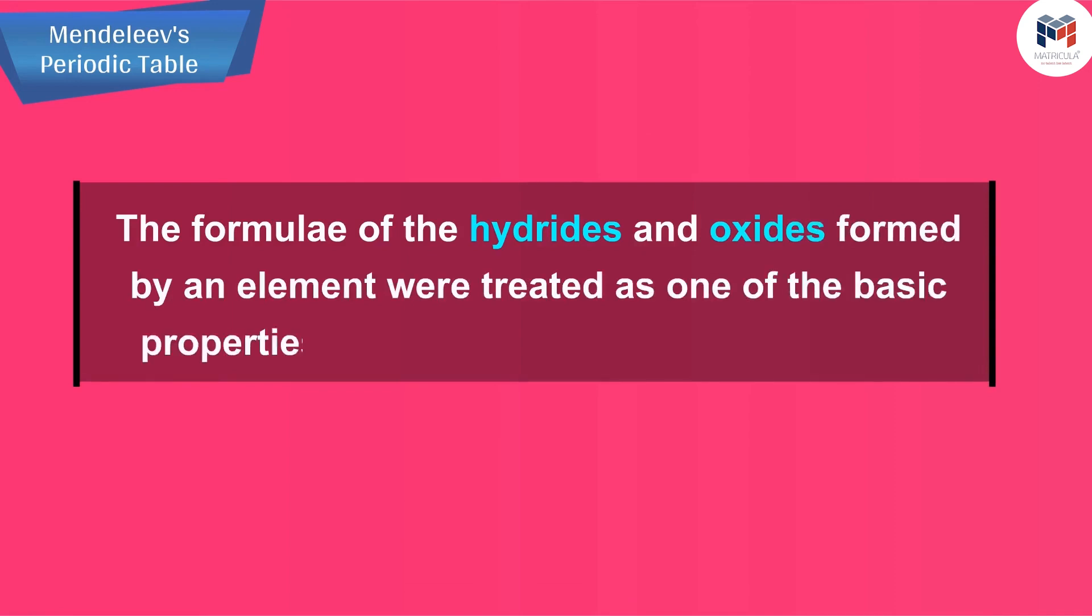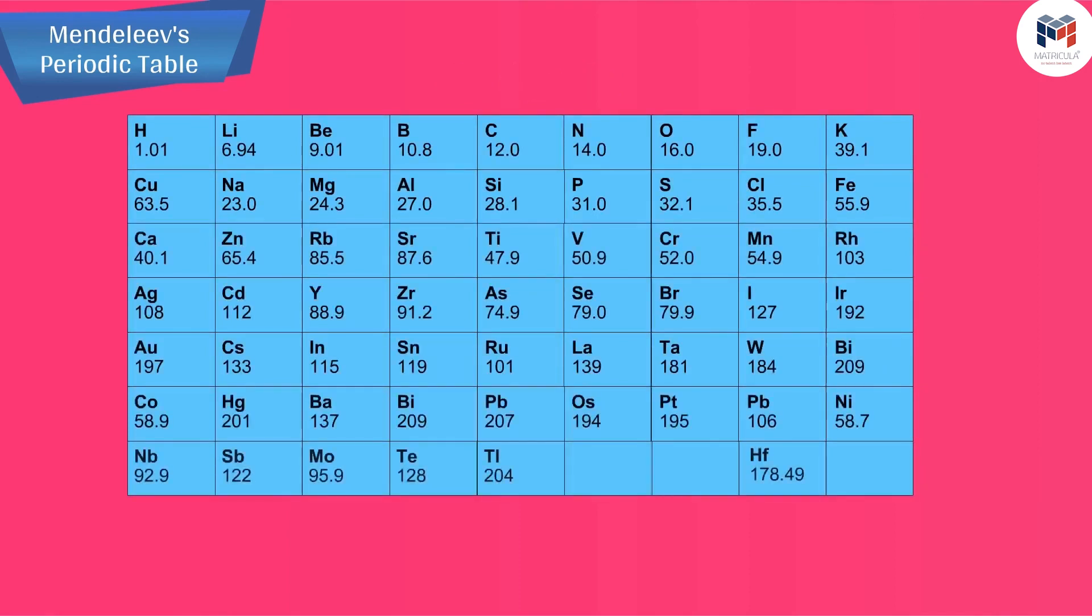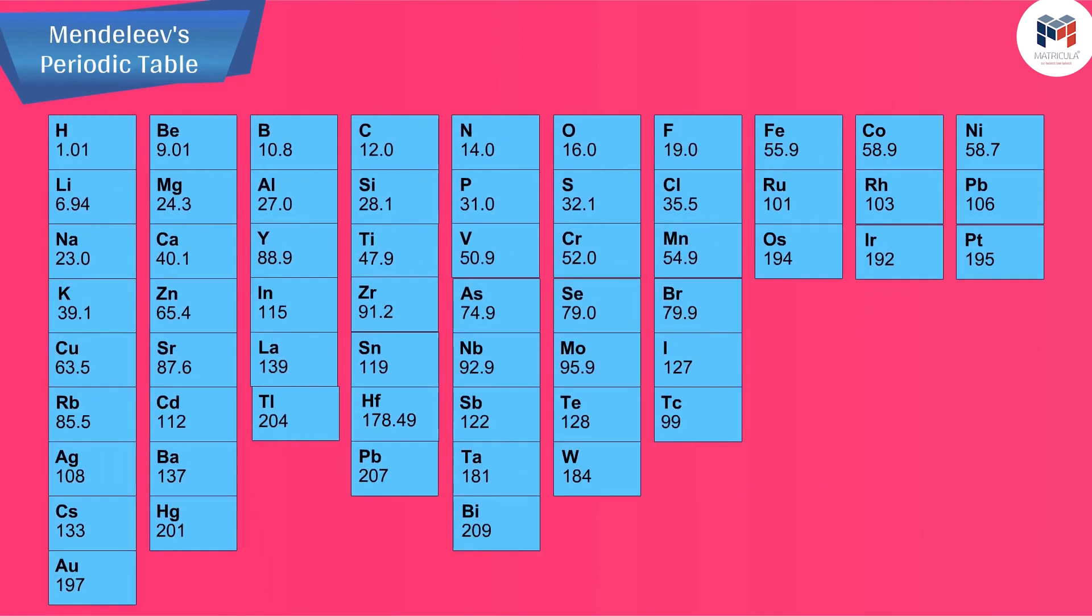He then took 63 cards and on each card he wrote down the properties of one element. He sorted out the elements with similar properties and pinned the cards together on a wall.